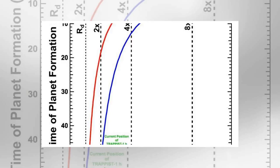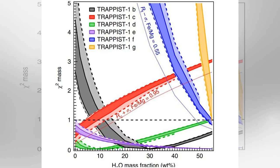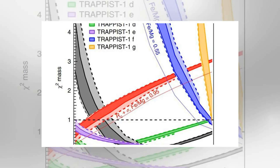Credit ASU. Explore further: Trappist-1 system planets potentially habitable. More information: Inward migration of the Trappist-1 planets as inferred from their water-rich compositions, Nature Astronomy 2018, DOI 10.1038/s41550-018-0411-6.